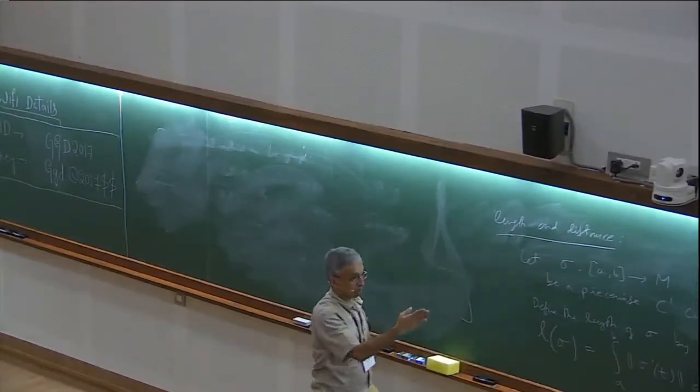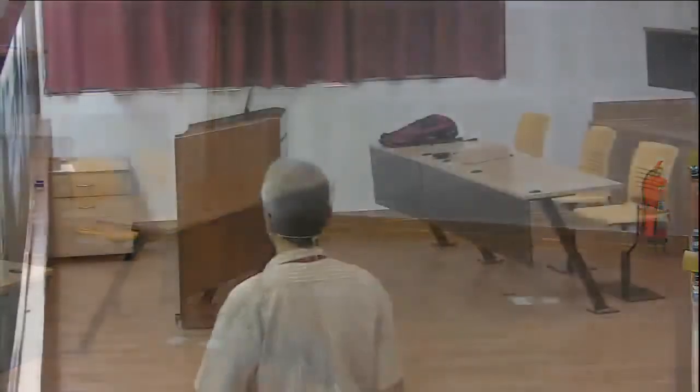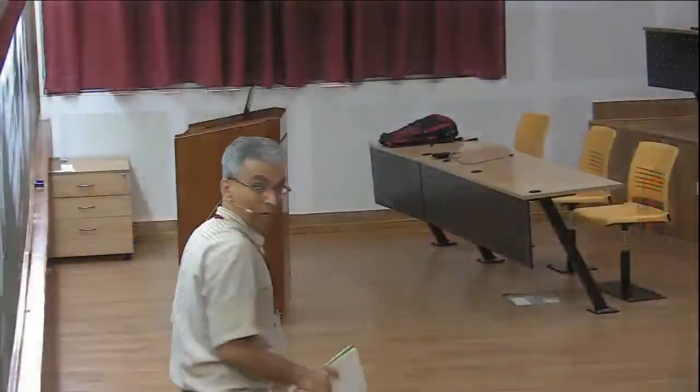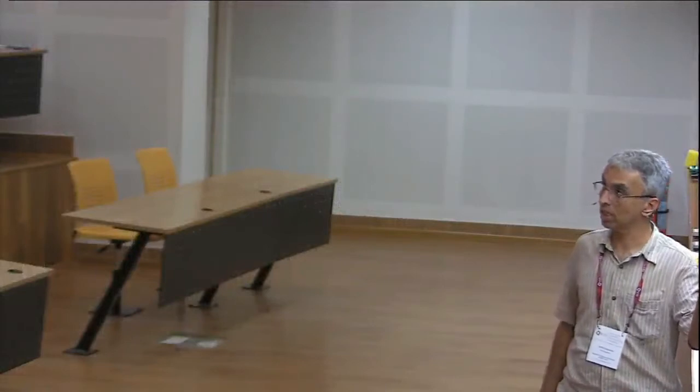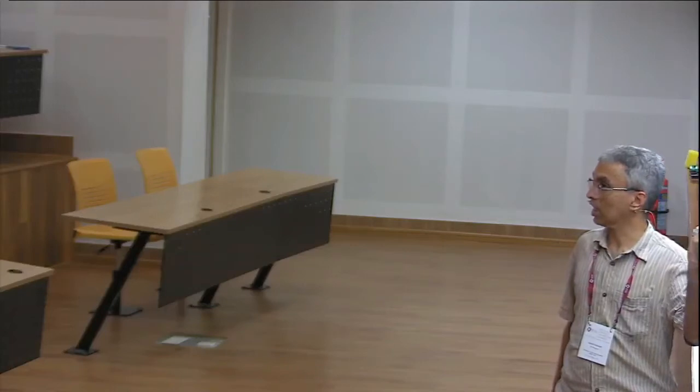In the Euclidean case, the shortest curve joining two points is the straight line. So naturally one would like to know whether, in any Riemannian manifold, we have analogs of the straight line — in other words, whether the infimum is always realized by some curve.